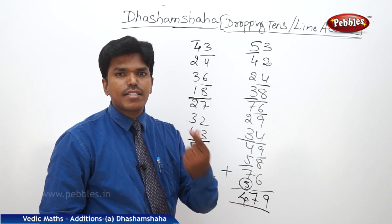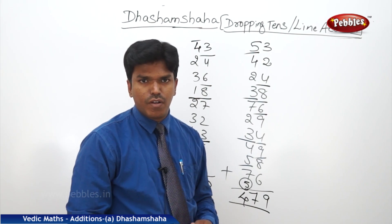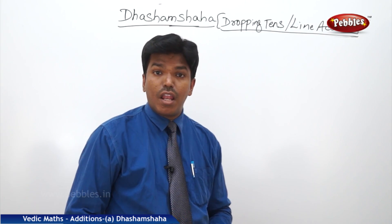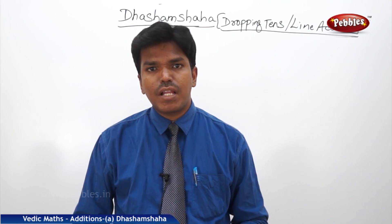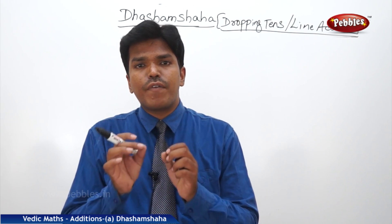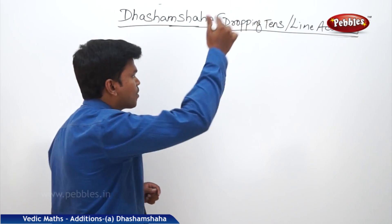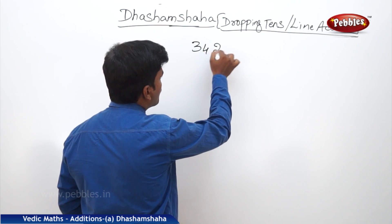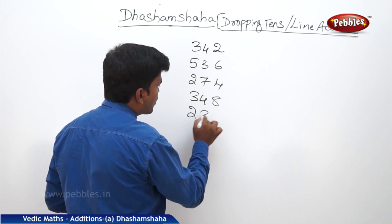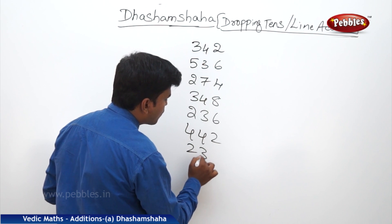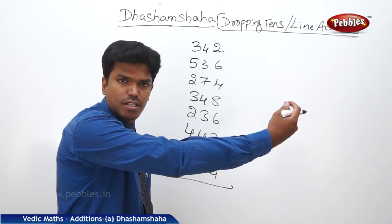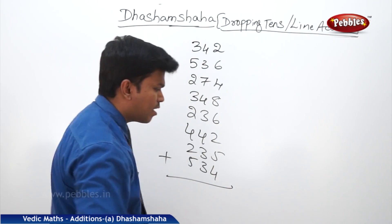Let us take the last example with 3 or 4 digit numbers in the line — how to do it fast. We'll see a 3-digit example as well as a 4-digit example, so you will get very good clarity. Suppose: 342, 536, 274, 348, 236, 442, 235, 534. Now let us add these numbers. Same way, start from the right side — start with the rightmost line.